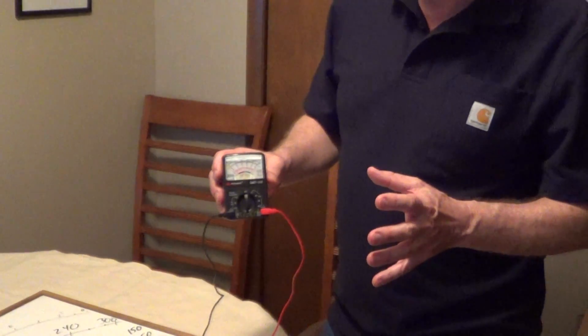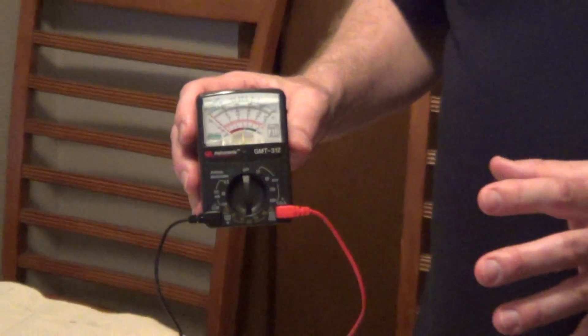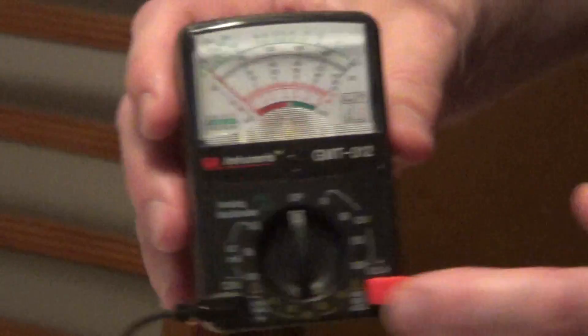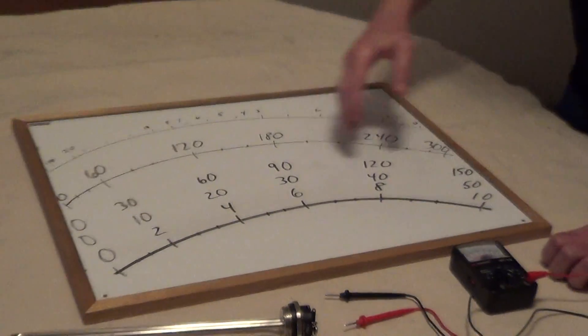I'll share with you a few tips on how to read the scale on an analog multimeter. This one's by Gardner Bender, you can pick up at almost any hardware store. It's excellent to have around the house if you're doing electrical projects. I have the scale here on the whiteboard and these numbers you're going to use whether you're testing for DC or AC.